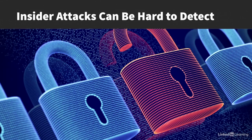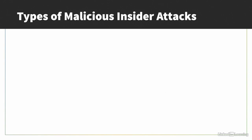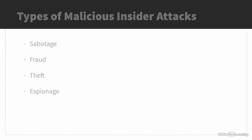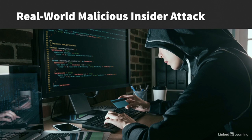Insider attacks can also be hard to detect because trusted insiders may have legitimate access that allows them to access and steal data without going through firewalls or other controls. Types of malicious insider attacks include sabotage — where the goal is to damage systems or destroy data — fraud, theft of sensitive data or intellectual property, and espionage, where the attacker steals sensitive data to sell to competitors. A real-world example was a trusted software engineer at a cloud services provider who hacked into one of their customers using a firewall vulnerability, accessing accounts of millions of credit card customers, with the total cost of the incident estimated at around $150 million.